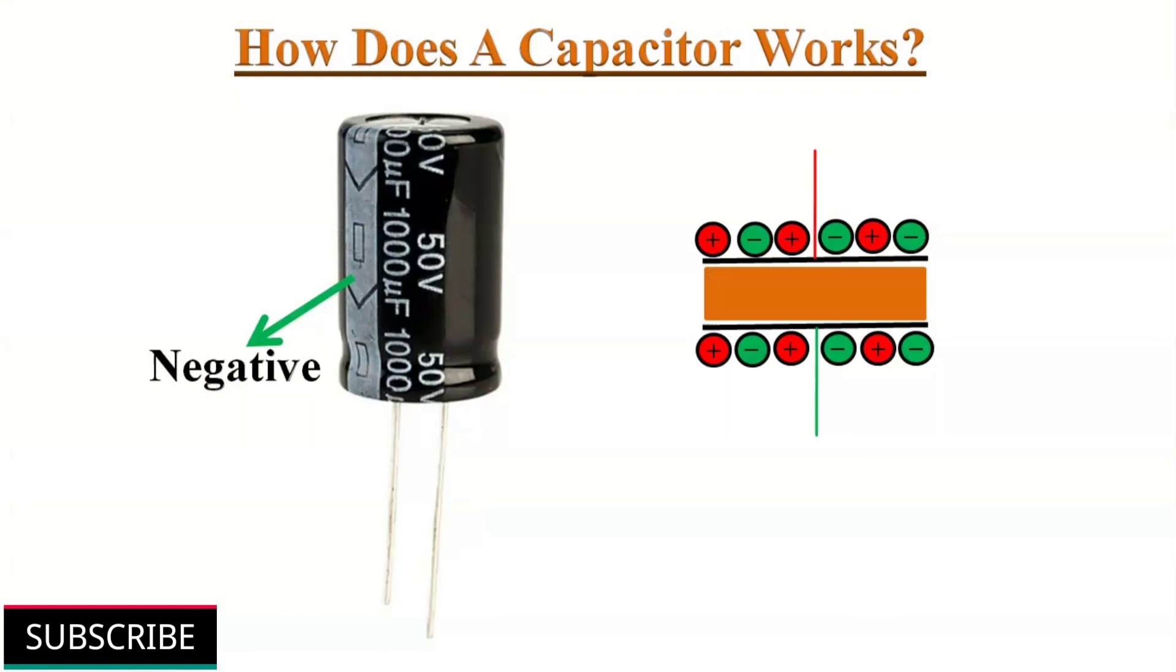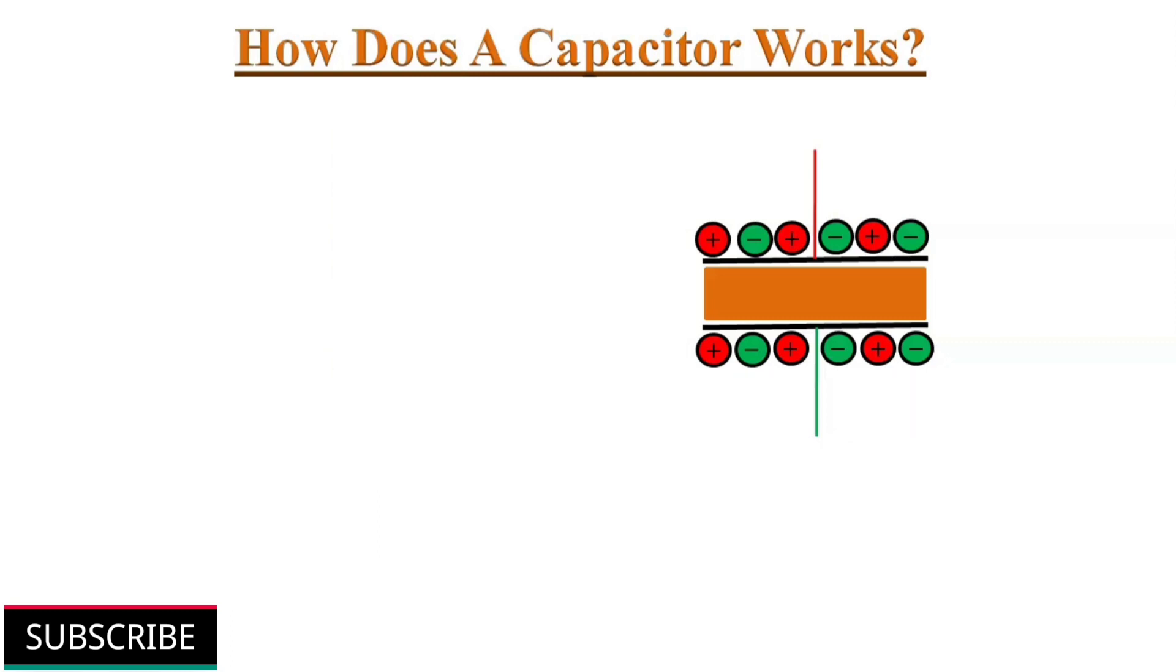Some capacitors like electrolytic capacitors are polarized. They must be connected in the circuit according to the marking on the case.